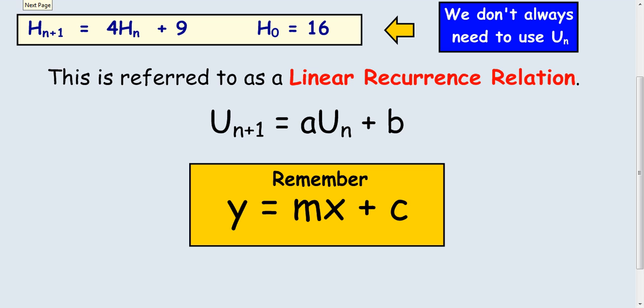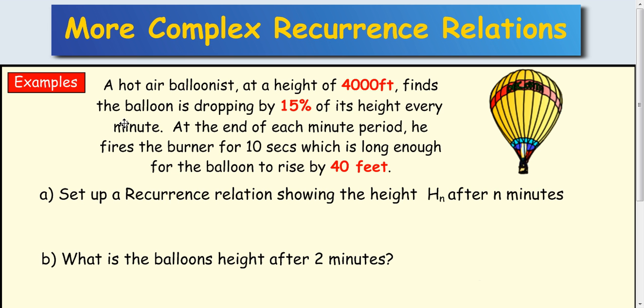Looking at a few examples. A hot air balloonist at a height of 4000 feet finds the balloon is dropping by 15% of its height every minute. At the end of each minute period he fires the burners for 10 seconds which is long enough for the balloon to rise by 40 feet.